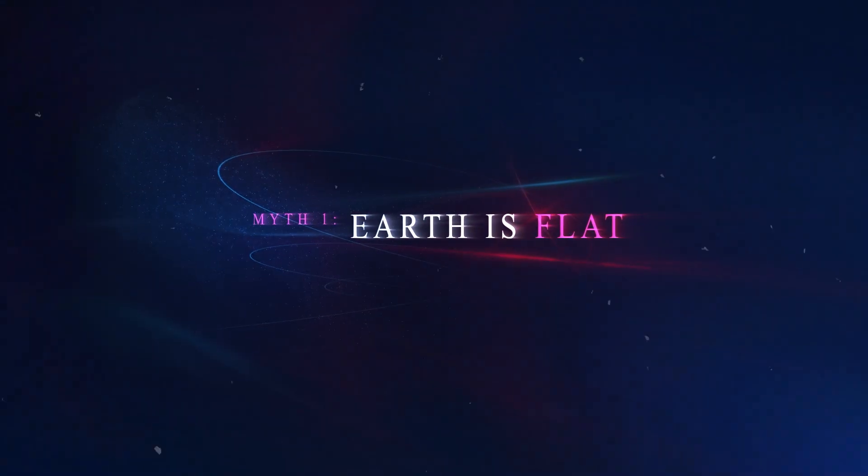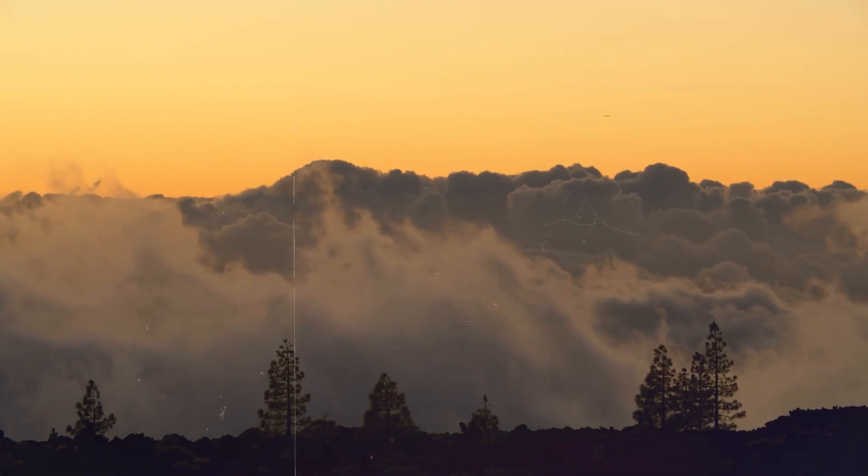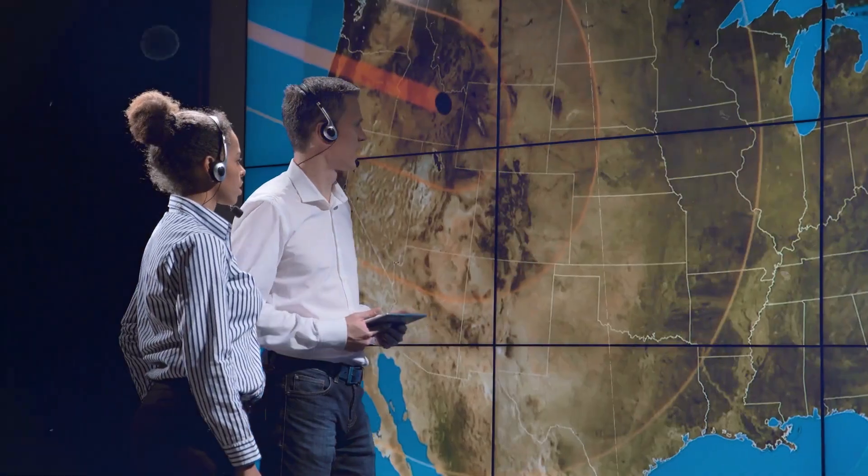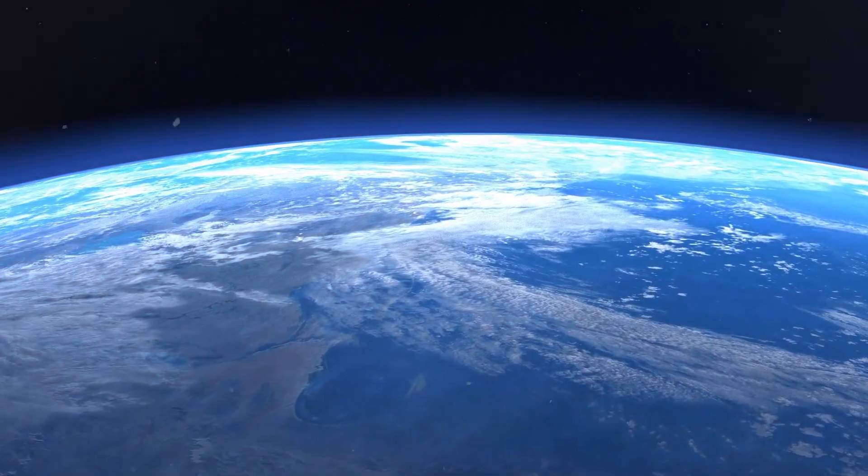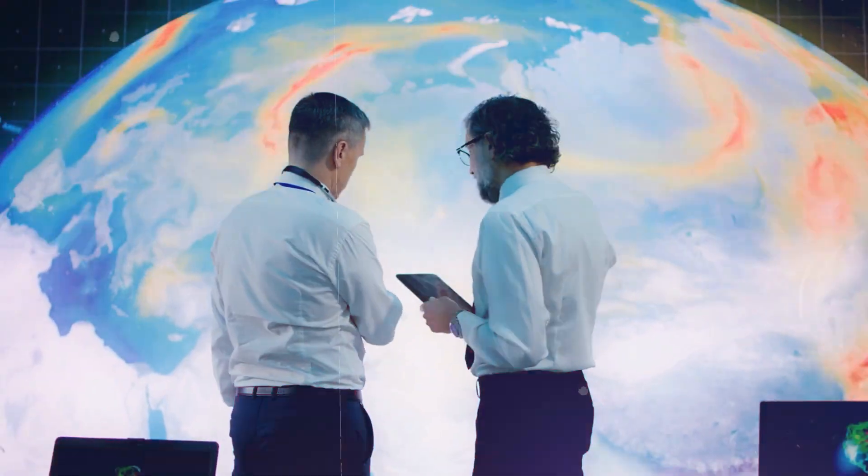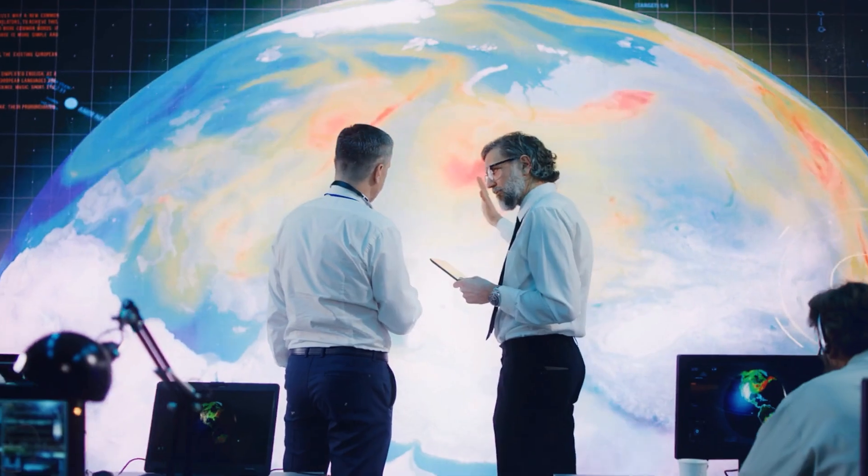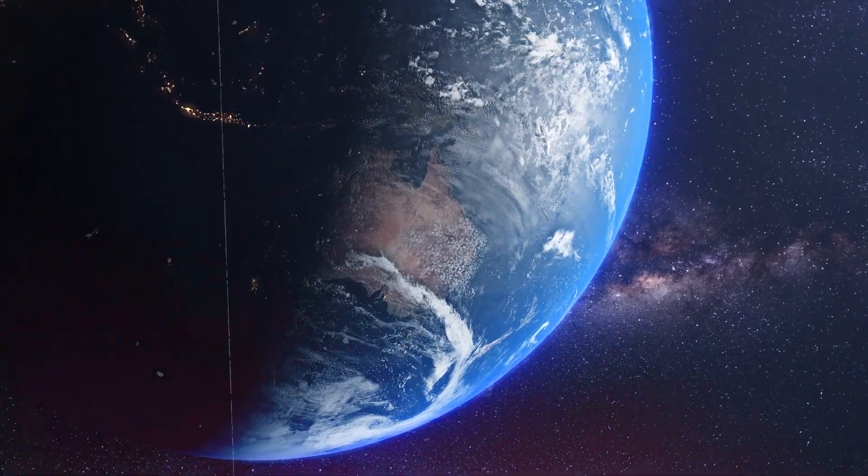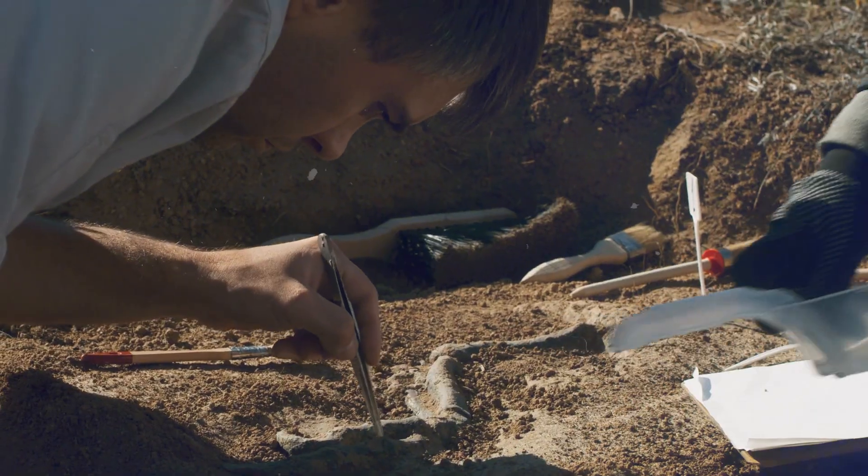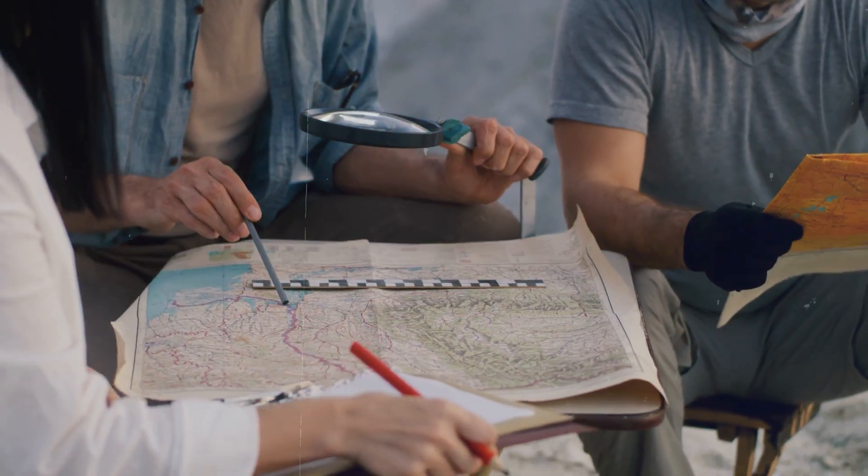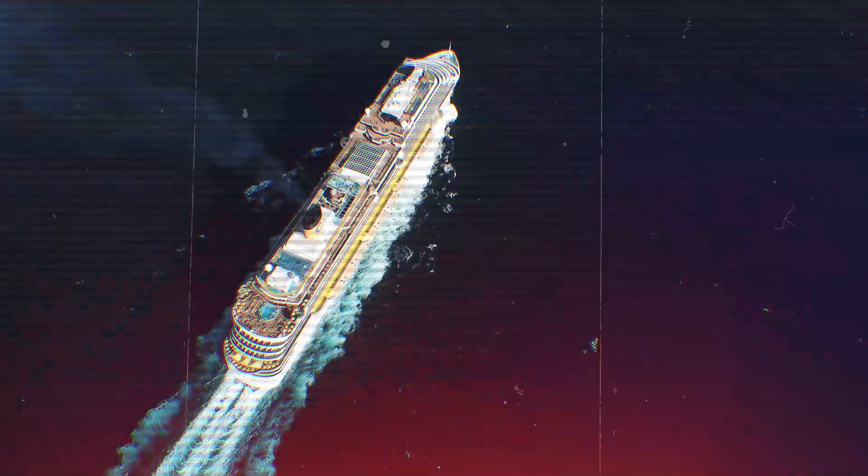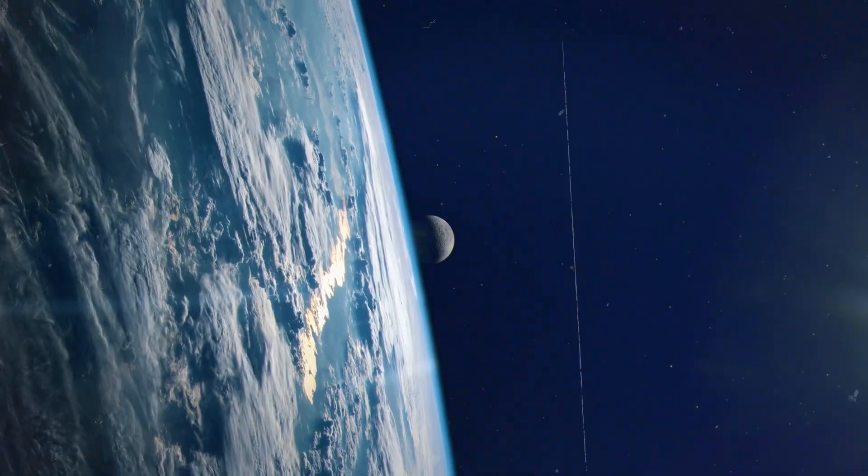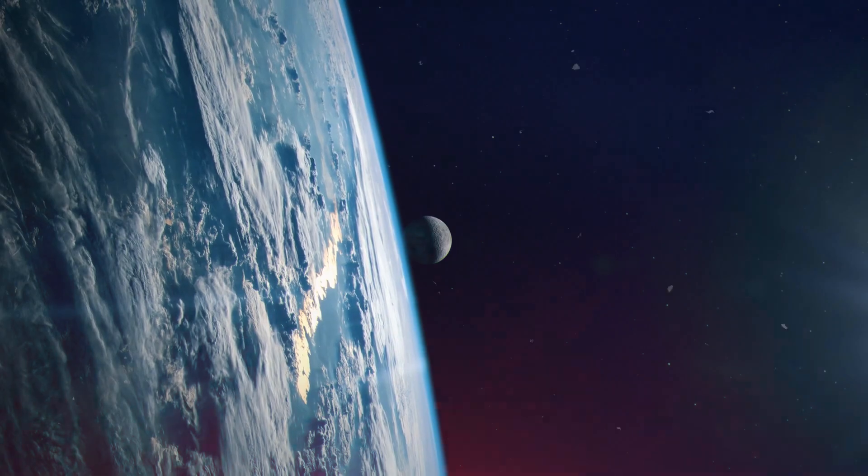Myth 1. Earth is flat. Centuries ago, many civilizations believed Earth to be a flat disk resting upon an infinite plane. This view seemed plausible given the apparent flatness of landscapes and oceans stretching to the horizon. However, ancient thinkers and adventurers began to notice anomalies that challenged this notion. Ships disappearing hull-first beyond the horizon suggested a curvature to the Earth's surface.